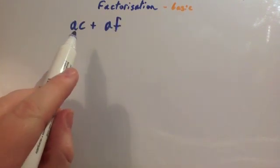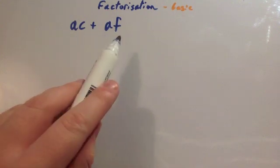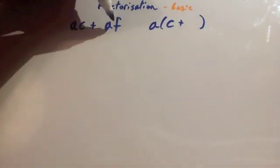Finally, if you had an expression such as ac + af, you can take a outside the brackets, and you're left with a(c + f).